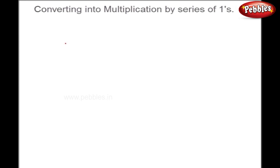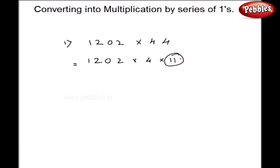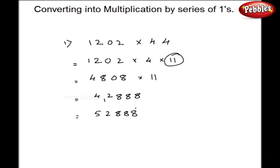Now I am going to show you a typical example of conversion. Suppose we have 1202 multiplied by 44. You know that 44 can be written as 4 into 11. So when you get this 11, we can use our specific method of multiplication. So let us simplify it further: 4 times 1202 gives 4808, and then 4808 multiplied by 11. By our method, I can directly write down the answer: 8, 8, 8, 12, and 4 — giving final answer 52888. In this way, we can split the multiplier and use our specific method.